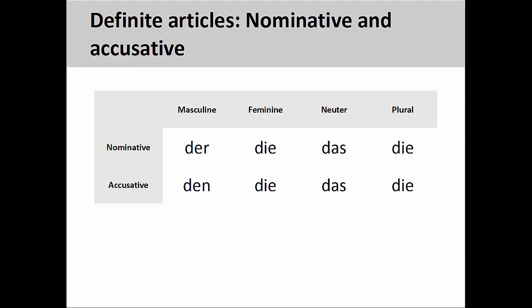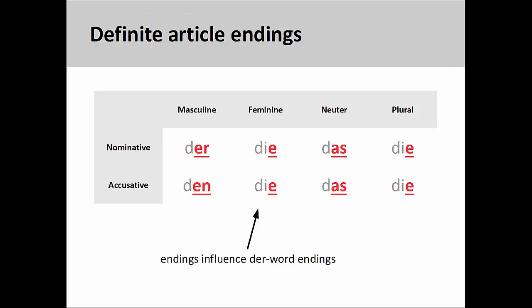In an earlier presentation, we looked at definite articles in the nominative and accusative cases. These articles form the first two rows of the chart you see on the screen. As we will see in this presentation, the endings of these definite articles will influence the endings that der-words take. In fact, der-words are so called since their endings are almost the same as the endings of definite articles.